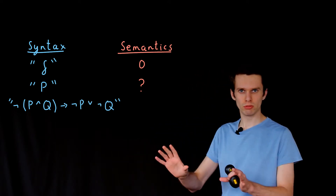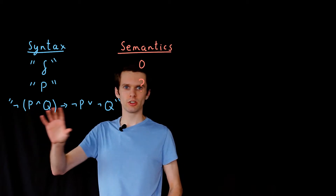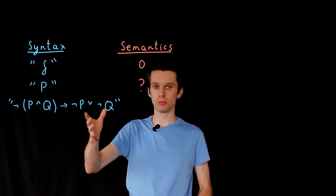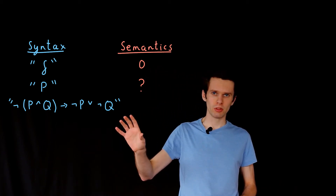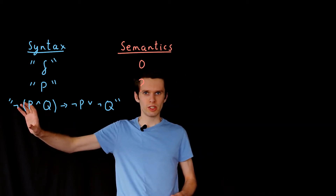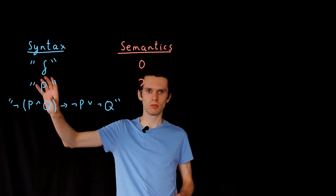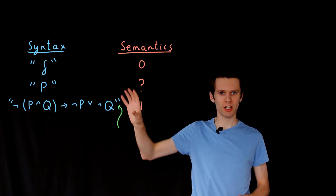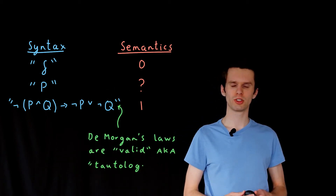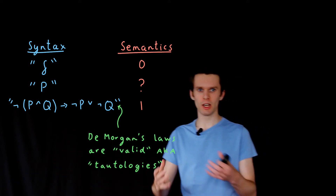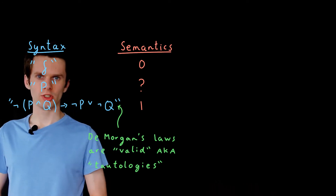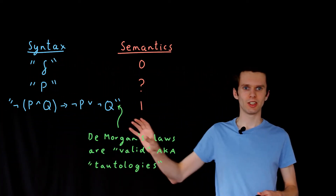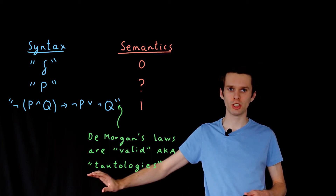Here's a final example — it's a bit longer. What we are saying is: not P and Q implies not P or not Q. Although this sentence contains symbols, it is always true under the semantics. Interestingly, this is part of one of de Morgan's laws — really important laws that come up a lot in logic. Sentences like these which are always true under the semantics are known as valid sentences or tautologies; they mean the same thing.